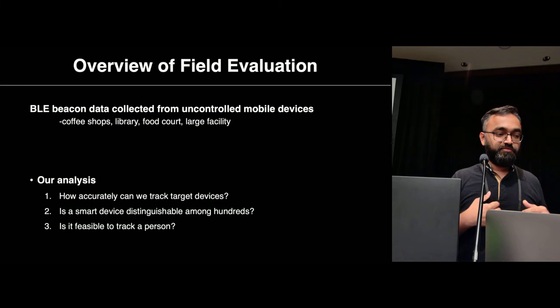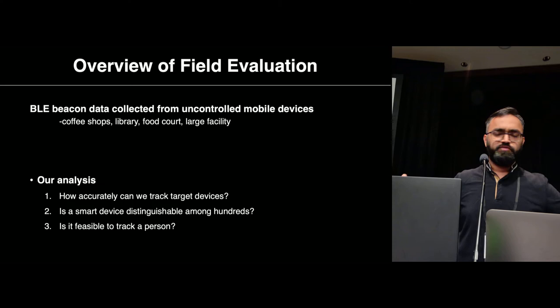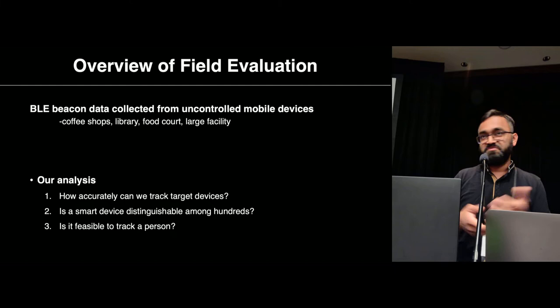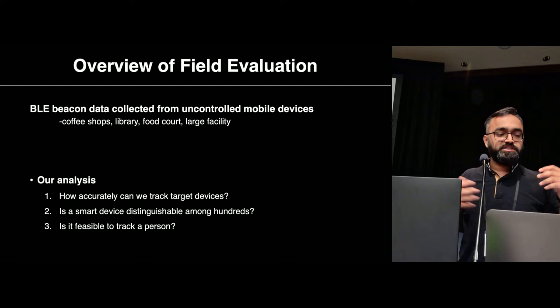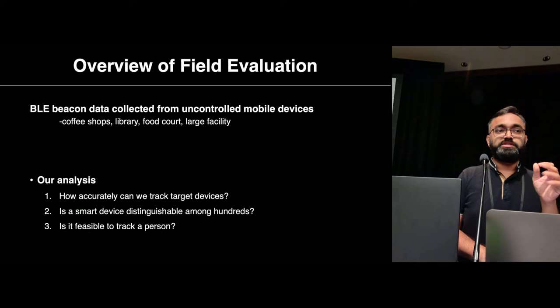We conducted a range of field experiments. We took our SDR out into the field and collected BLE beacon data from uncontrolled mobile devices — no control over these devices. We went to coffee shops, libraries, and food courts, and a large facility where people were walking through. In our analysis, we answered three questions: how accurately can we track certain targets, is a smart device distinguishable among hundreds of devices, and how feasible is actual person tracking?